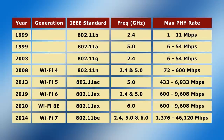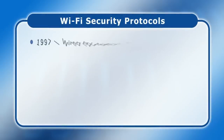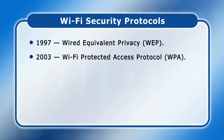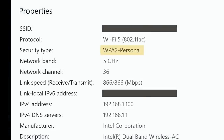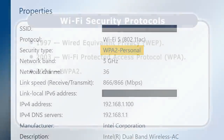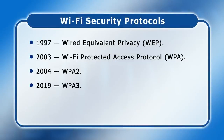In addition to the main 802.11 connection standards and their associated generations, there are some other key Wi-Fi standards worth being aware of. First, we have security protocols. The first was introduced in 1997 and called Wireless Equivalent Privacy, or WEP. However, in 2003, this was replaced by the much-improved Wi-Fi Protected Access protocol, or WPA. A year later, an even more secure version called WPA2 was introduced, and still today is a standard method to protect a Wi-Fi connection — as we can see in my laptop's connection properties. However, Wi-Fi 6 introduced WPA3, which offers stronger encryption and makes passwords harder to hack. So Wi-Fi will become more secure as more access points and user devices use Wi-Fi 6.